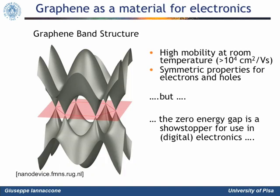The high mobility at room temperature and the symmetrical structure for electrons and holes are extremely interesting for using graphene as a material for electronics. The perspective of graphene-based electronics ranks high among the many reasons for the explosive growth of interest in graphene in recent years. However, graphene has also a zero energy gap, which represents a serious impediment for its use as a channel material of FETs.